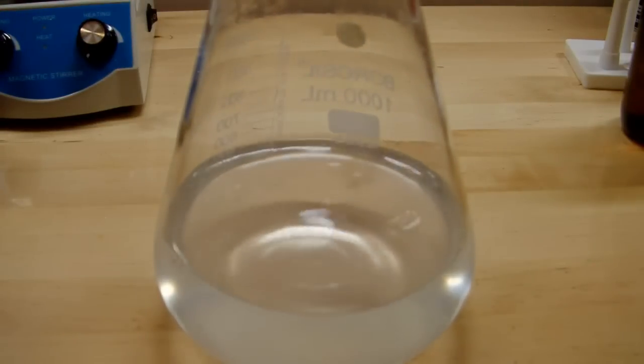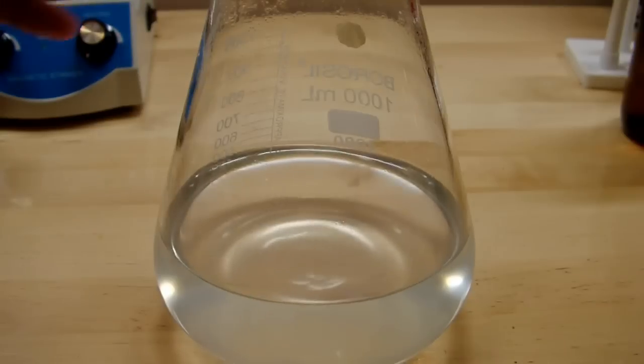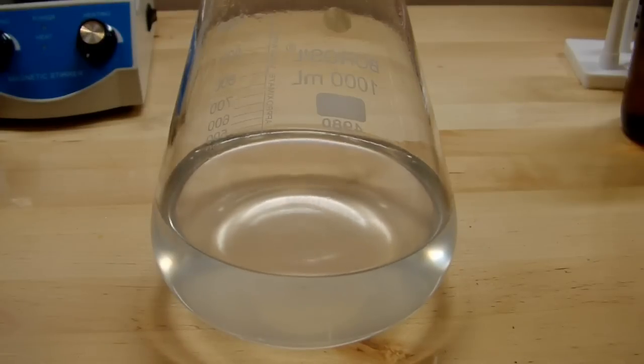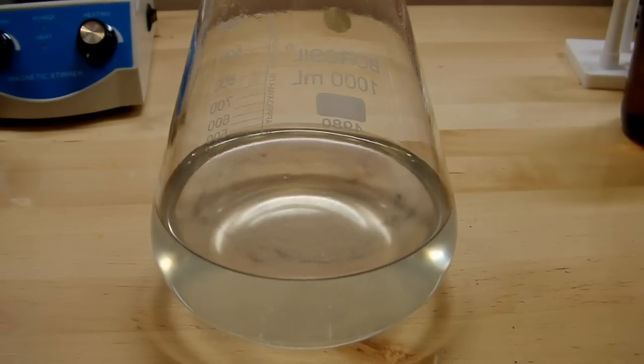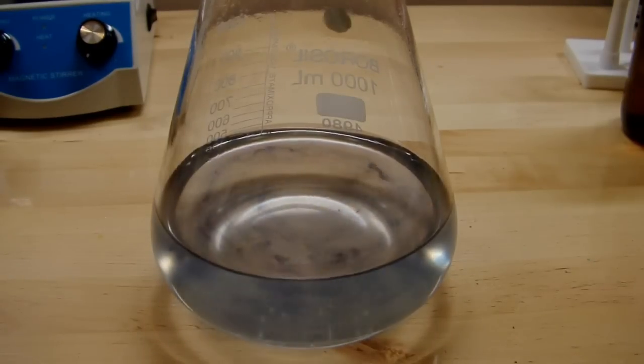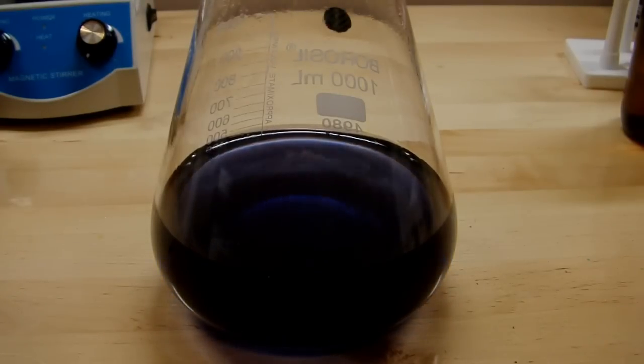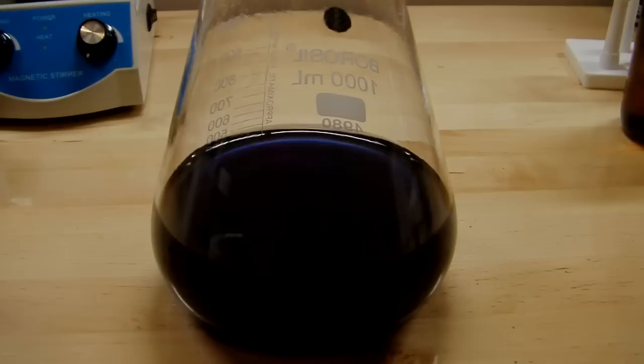But this is where it starts to get frustrating also. Because once it clears up, if you leave it alone, it tends to go right back to blue. Now you can see the colors start to condense. The iodine slowly complexes back with the starch to form that blue color again. So I just got to keep adding thiosulfate until it remains clear.